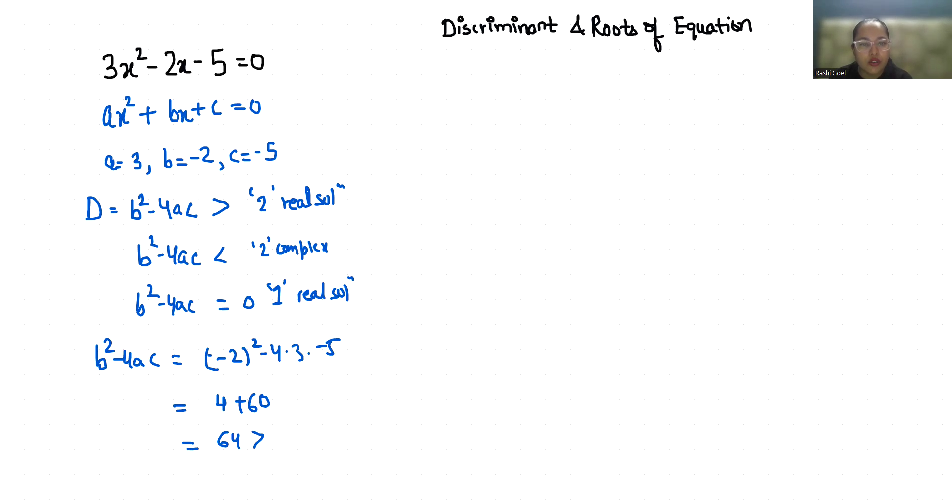So let's find out the solution. 3x squared minus 2x minus 5 equals 0. I'm going to use the quadratic formula: minus b plus minus square root of b squared minus 4ac, all over 2a.